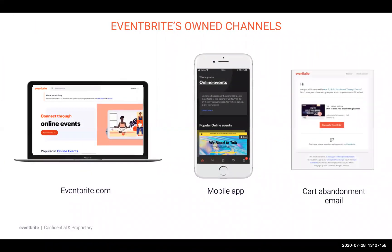Setting up your organiser profile and event page well will get you discovered across Eventbrite's own channels. These consist of our website and our mobile app, which lists a wide range of all events. If an attendee is logged in, all event listings they see are personalised based on an algorithm that predicts which events they'll most likely be interested in. Our cart abandonment emails are also sent to attendees who carted a ticket but didn't complete a purchase, helping to convert attendees who might be on the fence.